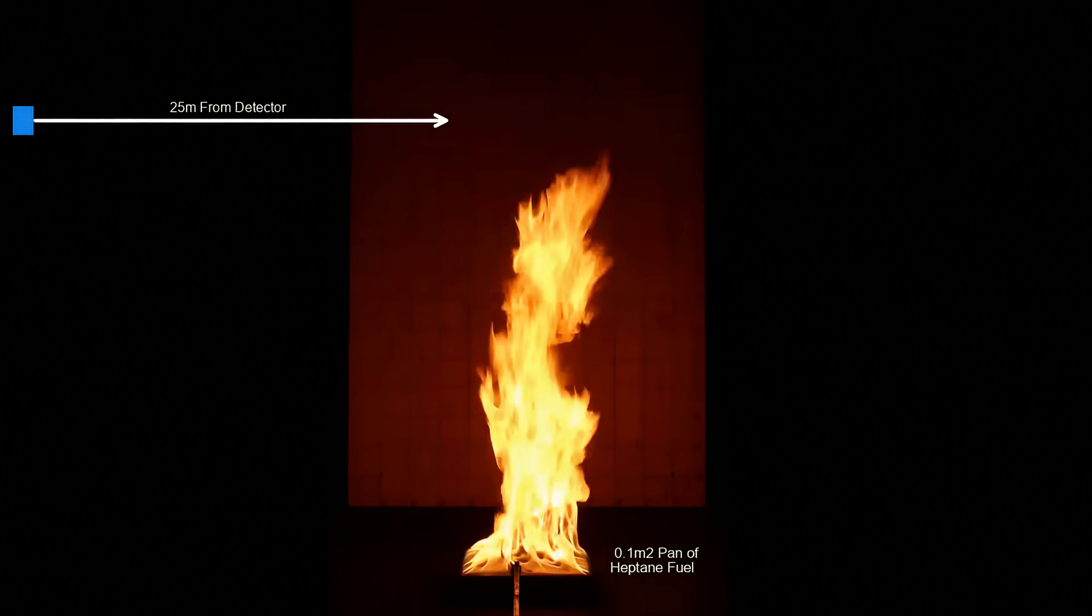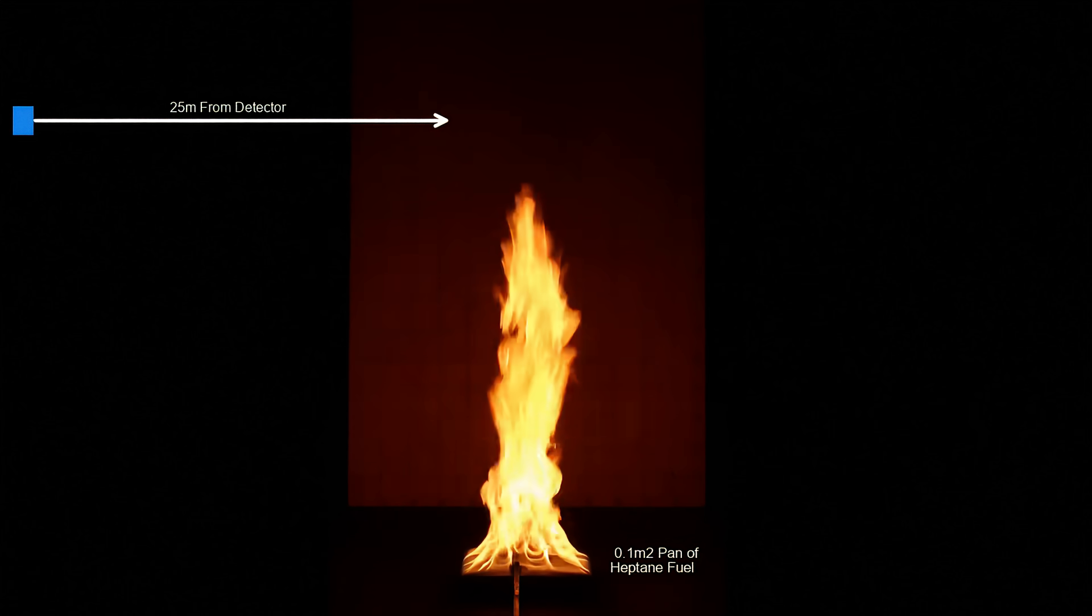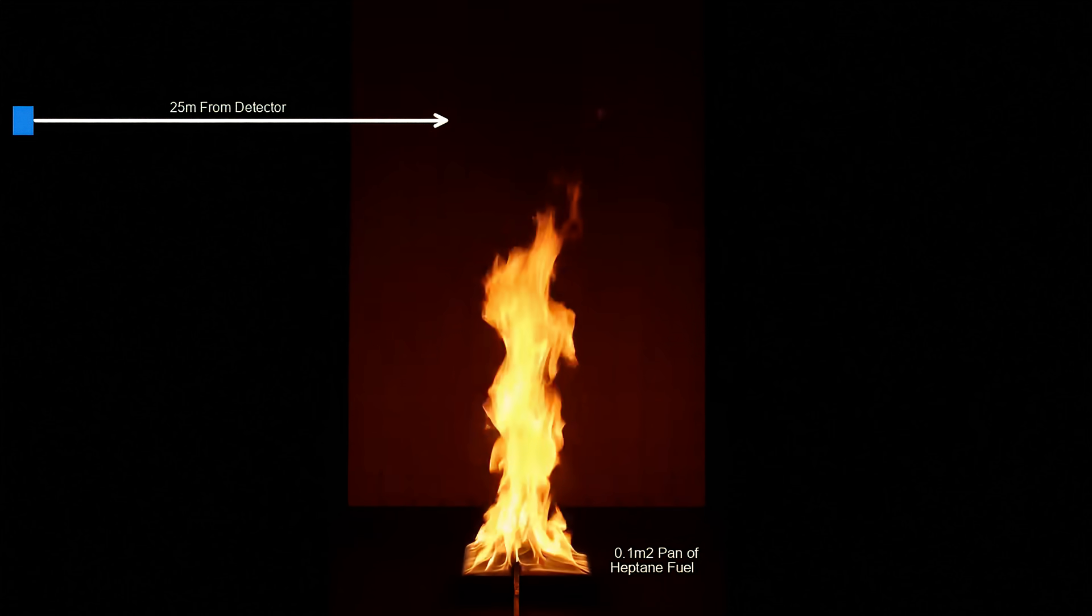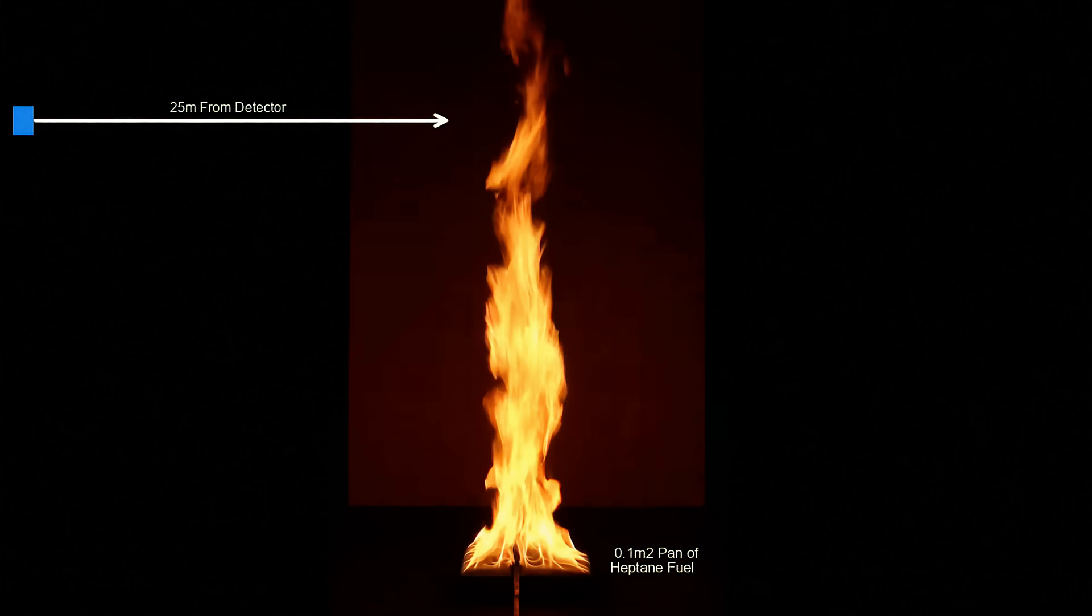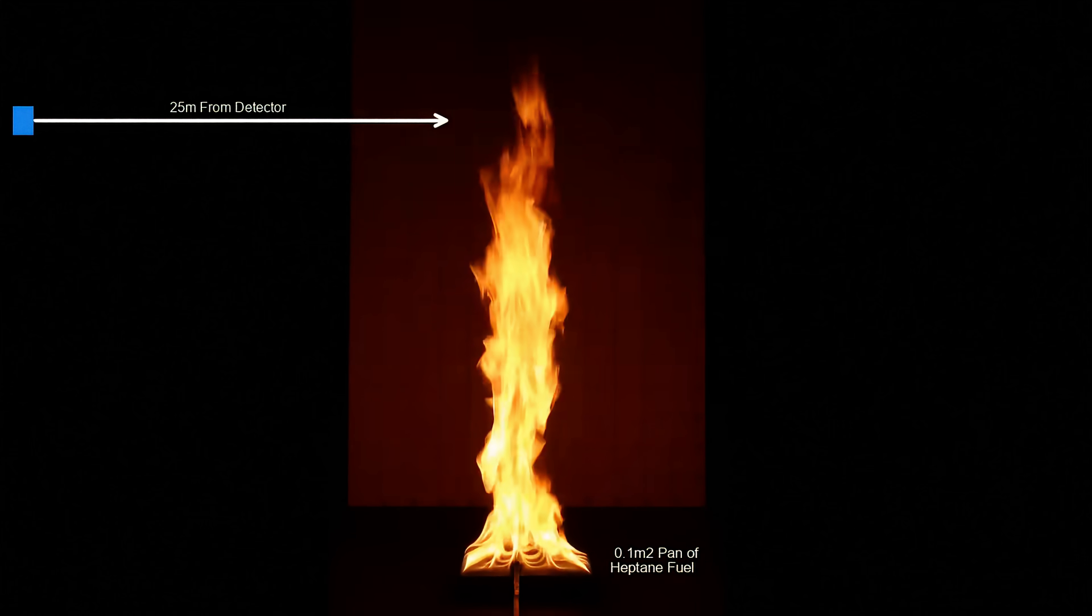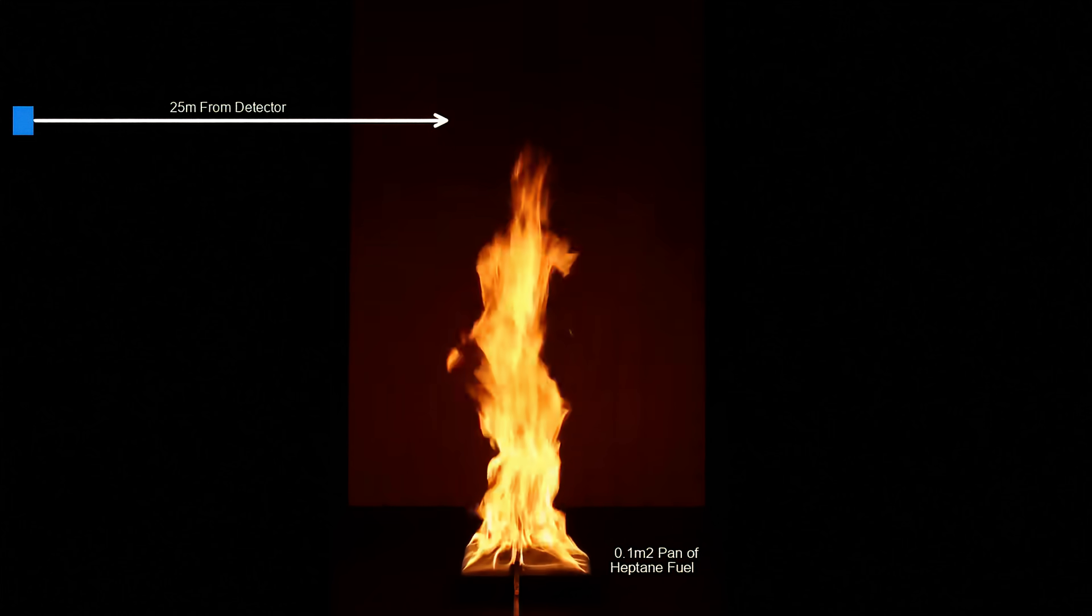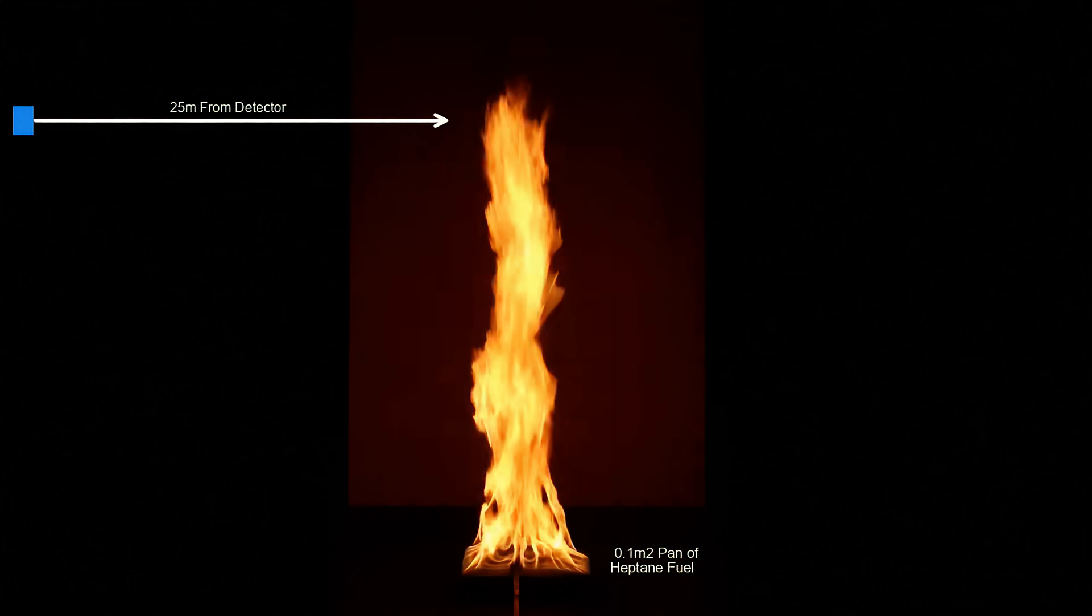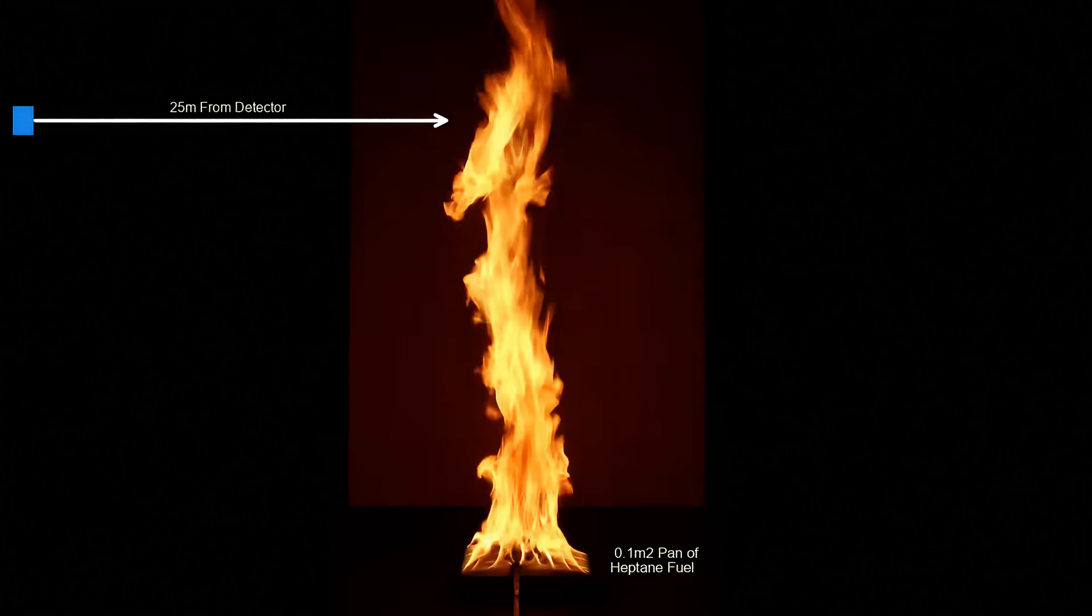As a rough overview, a pan fire test typically consists of igniting a 0.1 square meter pan of n-heptane fuel placed 25 meters away from the detector. Once the flame is established, the detector should be exposed to the yellow flame and is expected to alarm within 30 seconds. Precise details can be found in the relevant standard.